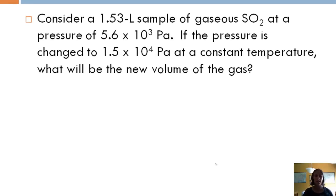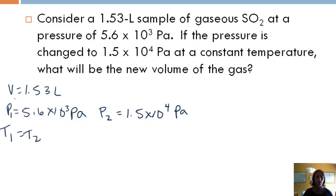Let's look at an example. So it says consider a 1.53 liter sample of gaseous SO2 at a pressure of 5.6 times 10 to the third pascals. If the pressure is changed to 1.5 times 10 to the fourth, so that's our P2 or the second condition, at a constant temperature, so we know T1 equals T2, what will be the new volume? So V2 equals question mark. That's what we're trying to solve for.